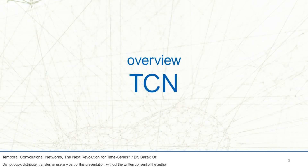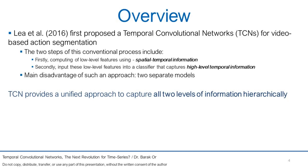Let's start with a brief review of TCN. The seminal work of Leah et al. in 2016 first proposed a TCN for video-based action segmentation. The two steps of this conventional process include: firstly, computing low-level features using CNN that encodes spatial-temporal information, and secondly, inputting these low-level features into a classifier that captures high-level temporal information using RNN. The main disadvantage of such an approach is that it requires two separate models. TCN provides a unified approach to capture both levels of information hierarchically.